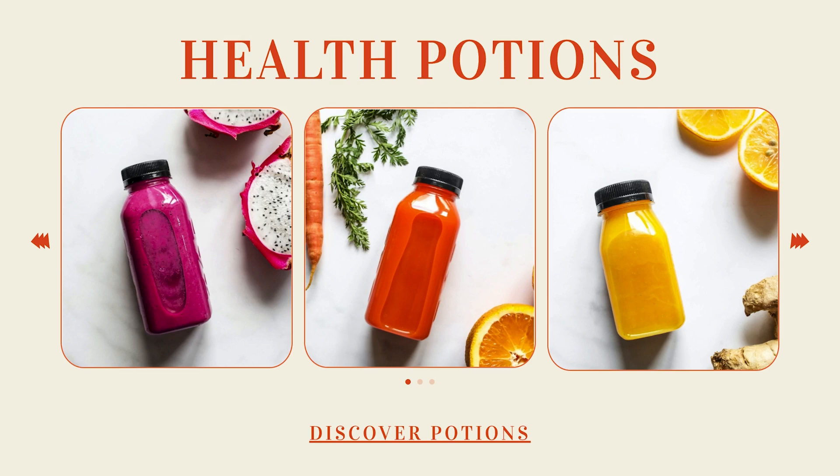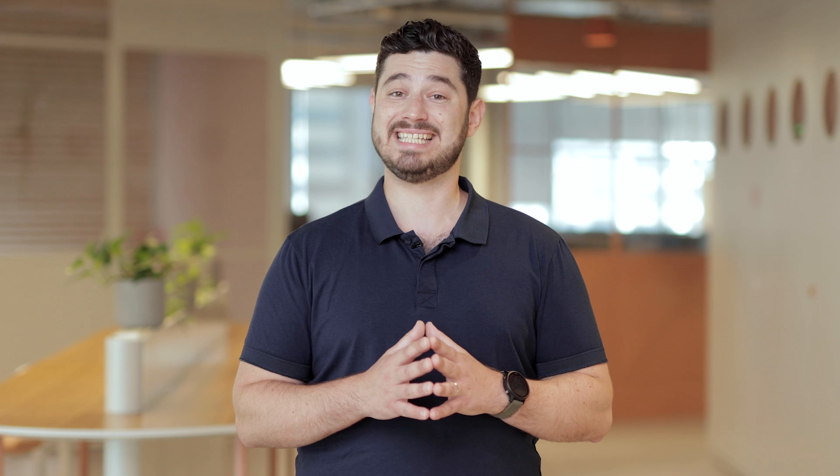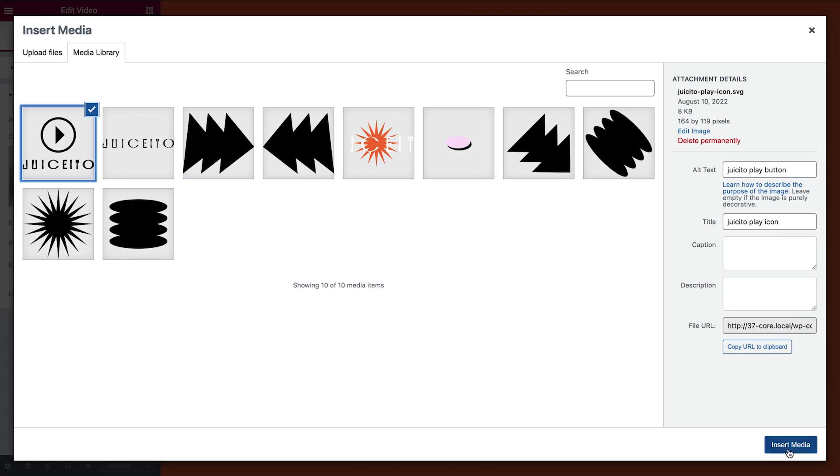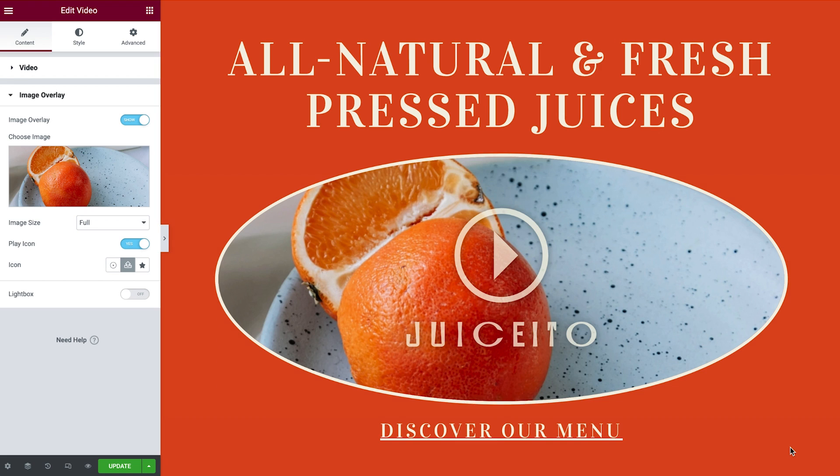Last on the list, Elementor 3.7 also includes an additional customization option. With this update, you are no longer restricted to the default icons in the video, image carousel, and alert widgets. Instead, you can choose icons from the icon library or upload your own. Fancy placing your logo on the video overlay to increase brand awareness? No problem — go ahead and upload your logo instead of the default play icon.